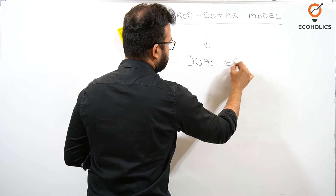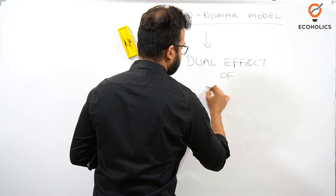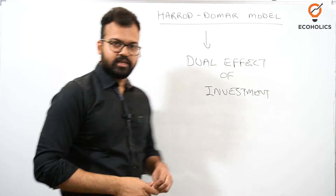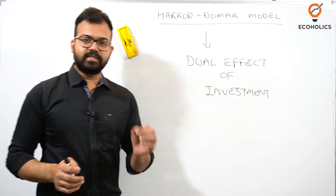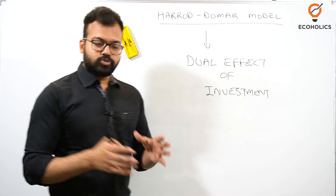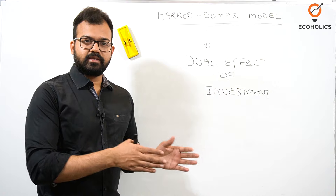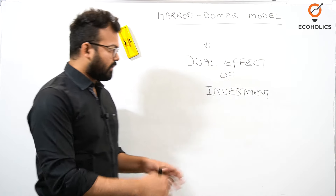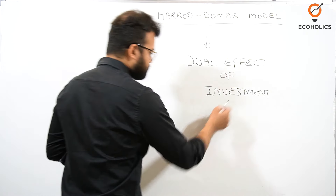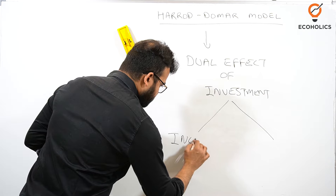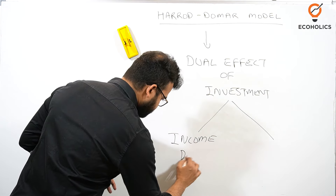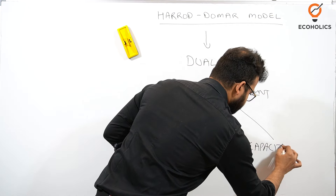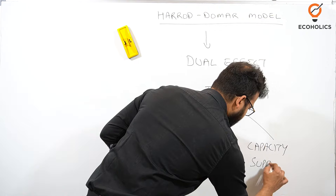Under the Harrod-Domar model, one of the first important things they have given is the dual effect of investment. If you want to grow at a steady state, you need investment. Investment is simply the net addition to the stock of capital, which comes from saving. The dual effect consists of: first, the income effect — also known as the demand effect — and second, the capacity effect — also known as the supply effect or supply-side perspective.